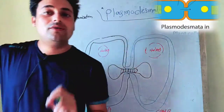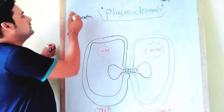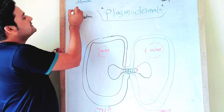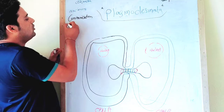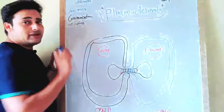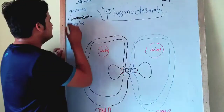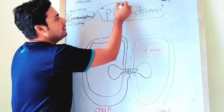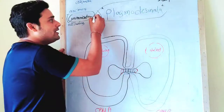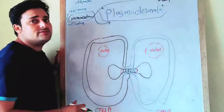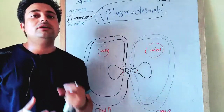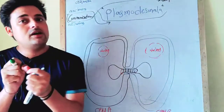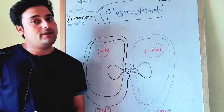In this video we will be learning about only plasmodesmata, which is part of communication junctions. There are three types of cell junctions: communication junctions, anchoring junctions, and occluding junctions. In this video we will only be learning about communication junctions, which have two parts — gap junctions found in animal cells, and plasmodesmata found in plant cells. We are focusing on what plasmodesmata are and how they provide junctions between cells, as it is the most important basic knowledge of cell communication.